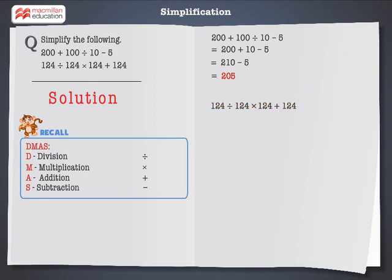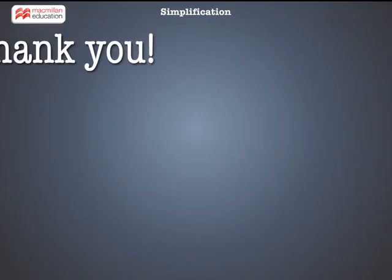As per the DMAS rule, first we perform the division. 124 divided by 124 gives us 1. Now let us perform the multiplication: 1 multiplied by 124 is equal to 124. Then, 124 plus 124 is equal to 248. Hence, 248 is the final answer.